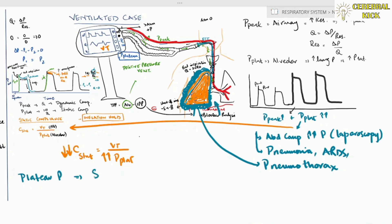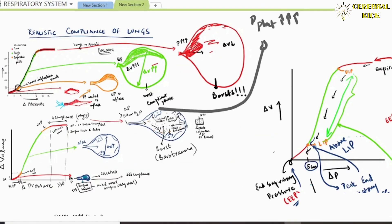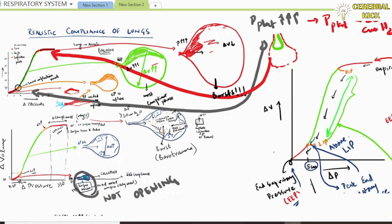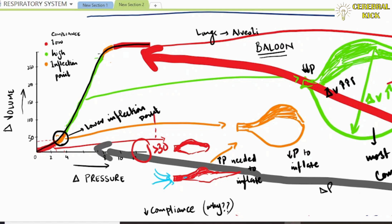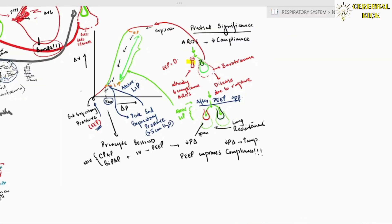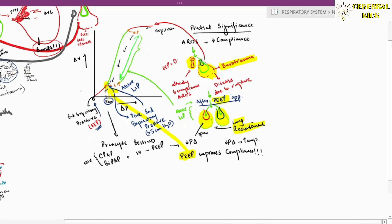Plateau pressure tells us about static lung compliance. In ARDS, compliance is reduced so plateau pressures increase. Per the ARDSnet protocol, plateau pressures must be kept below 30 cmH2O, because above 30 it causes barotrauma to healthy lung. To reduce plateau pressures and improve compliance, we give PEEP — this recruits collapsed alveoli, keeps the lungs above the lower inflection point into the more compliant zone, increasing compliance.